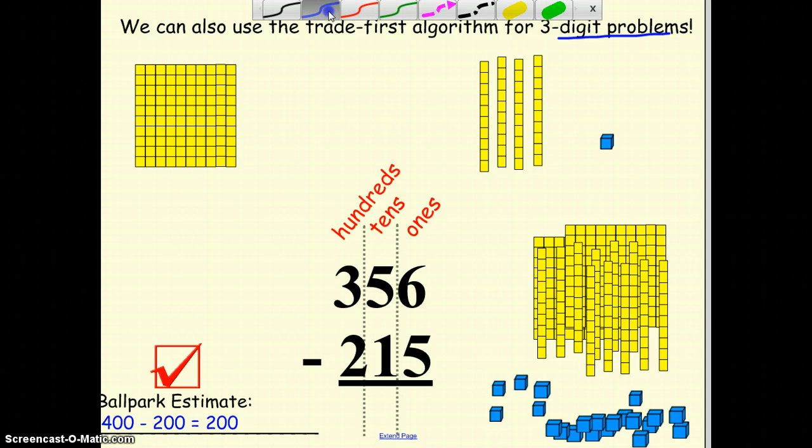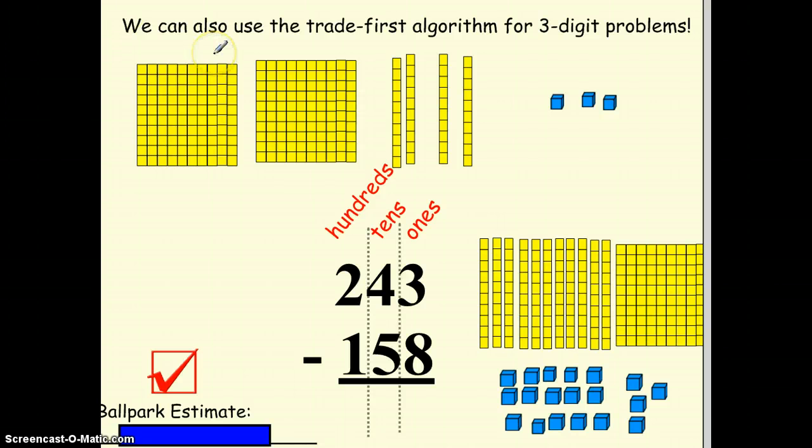So I should be left with 141. Let me double check using my paper down here. 6 take away 5 is 1. 5 tens take away 1 ten is 4 tens. And 3 hundreds take away 2 hundreds is 100, 141, close to 200.